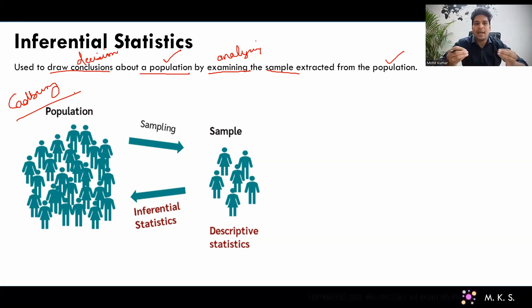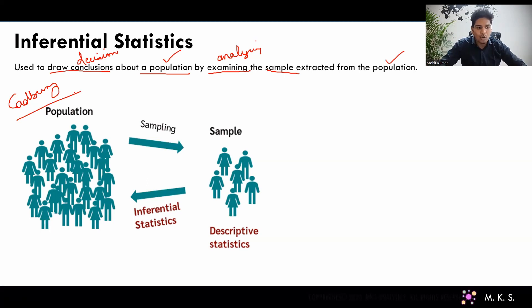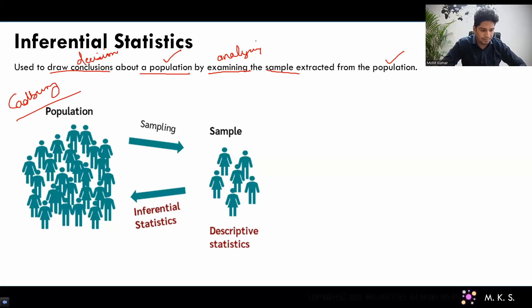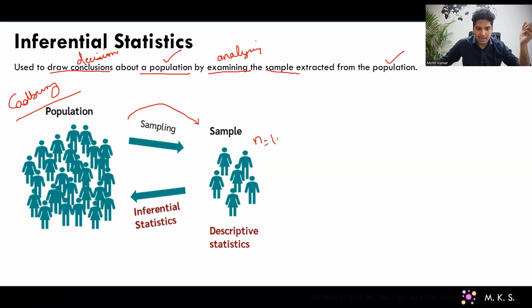A lot of the chocolates have been consumed by users and customers, or they might not be in their plant — whatever the reason, they definitely cannot work on the population. They cannot collect data about the entire population. That's where inferential statistics comes into the picture and helps solve this problem. Rather than working on the population, we can extract a sample using different sampling techniques. Let's say we have collected data about 10,000 chocolates — that will be our sample, with a sample size of 10,000.